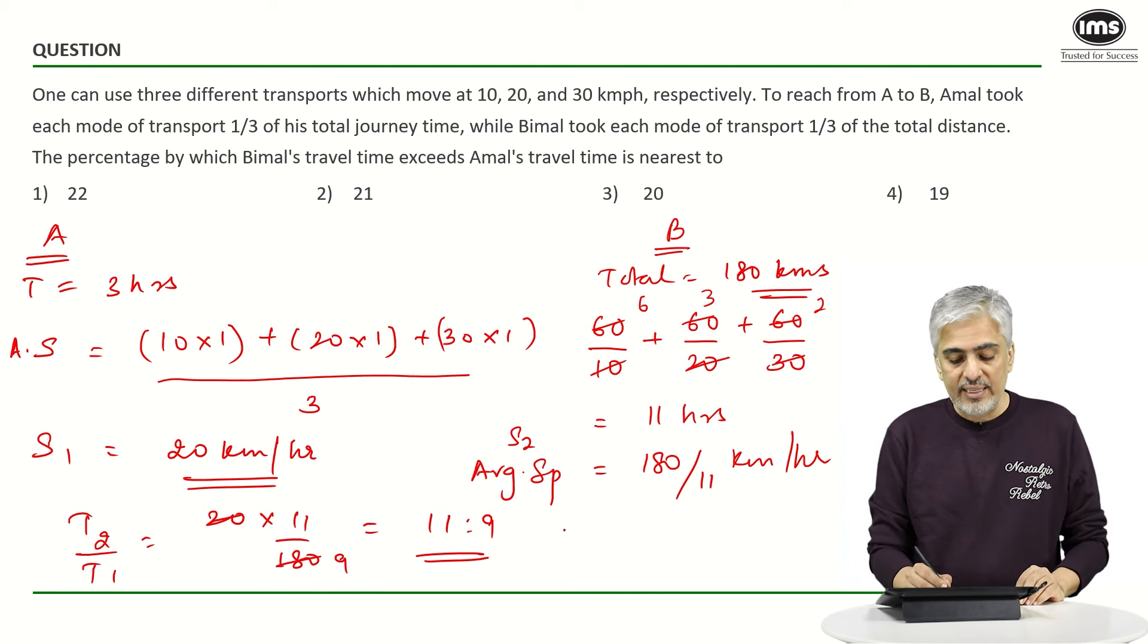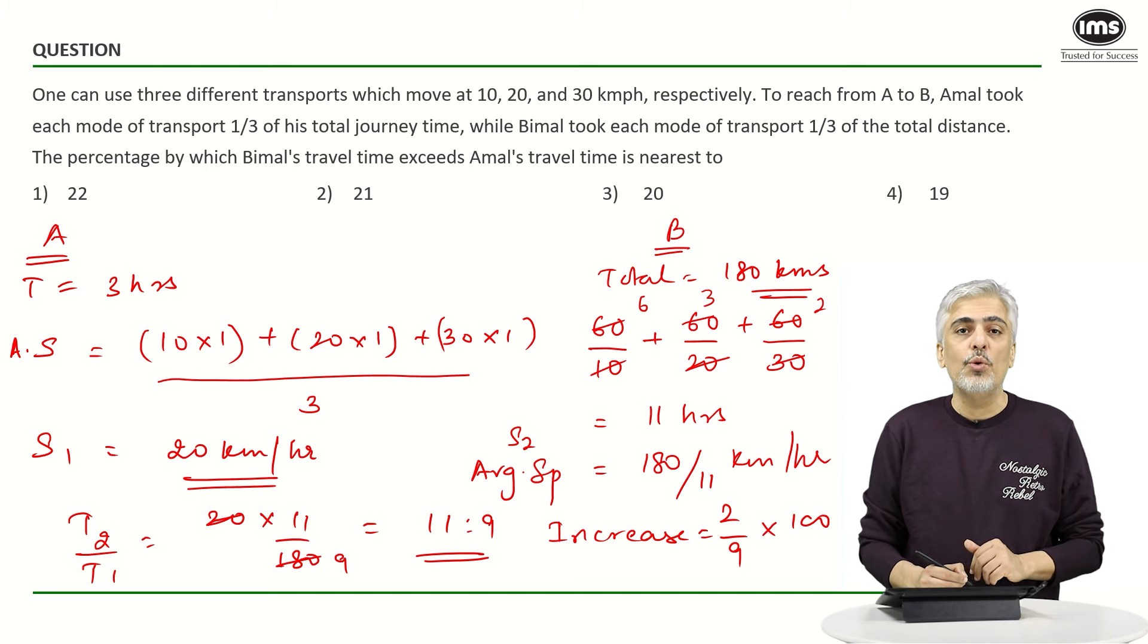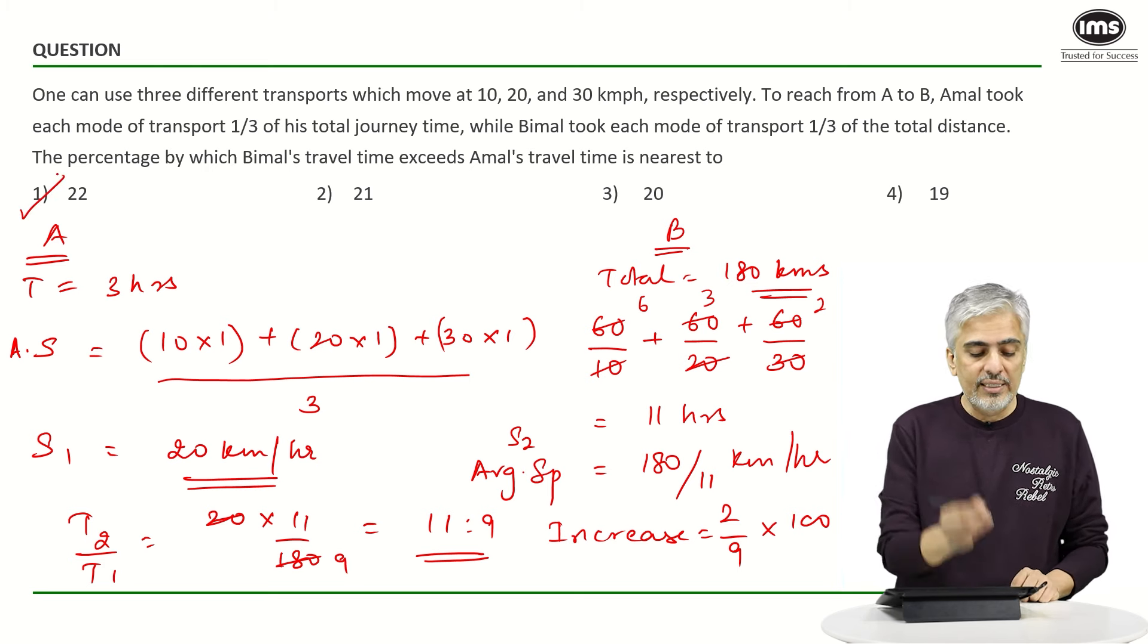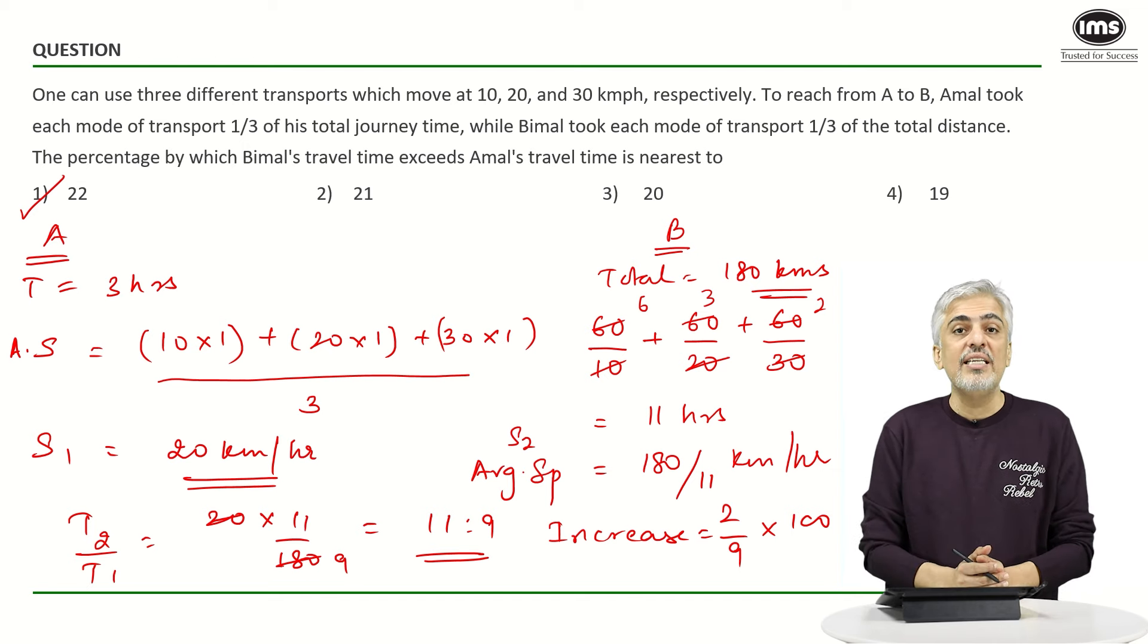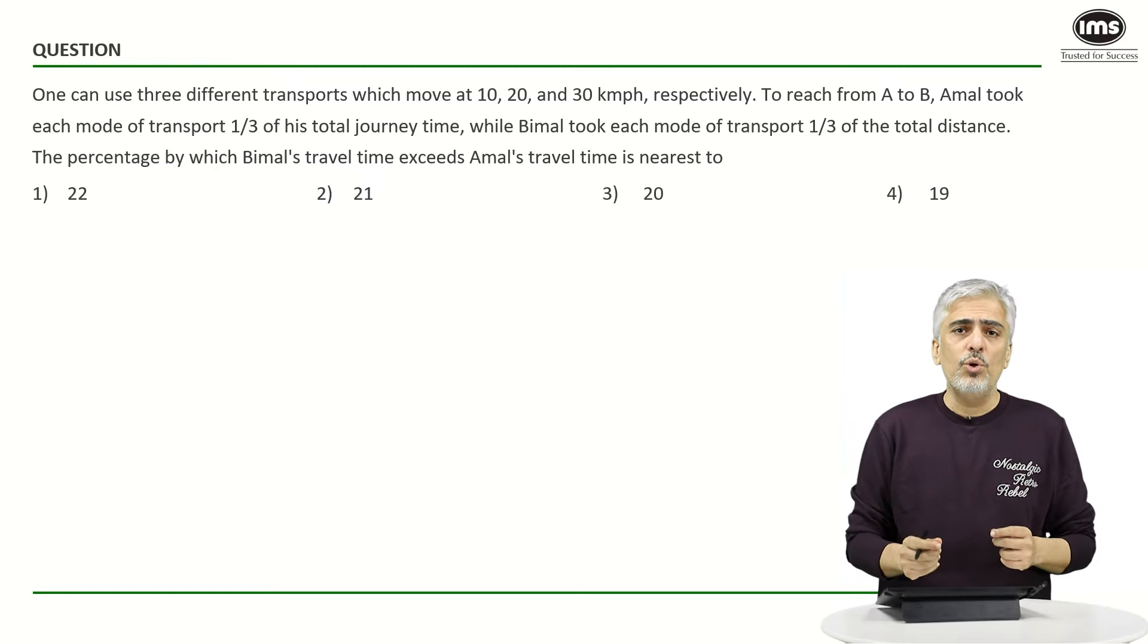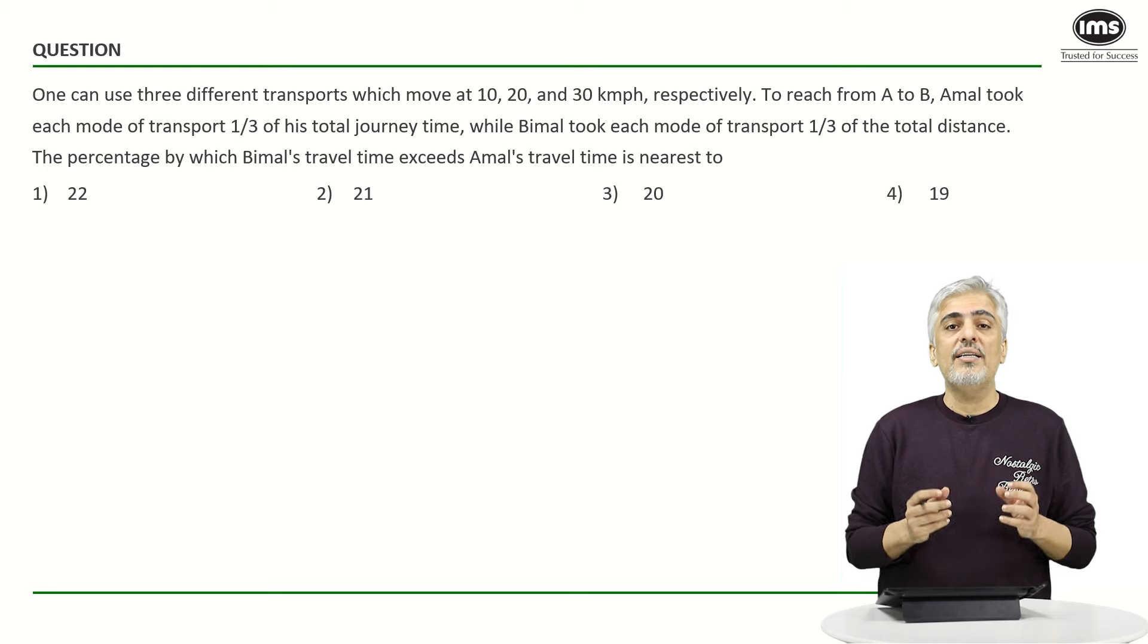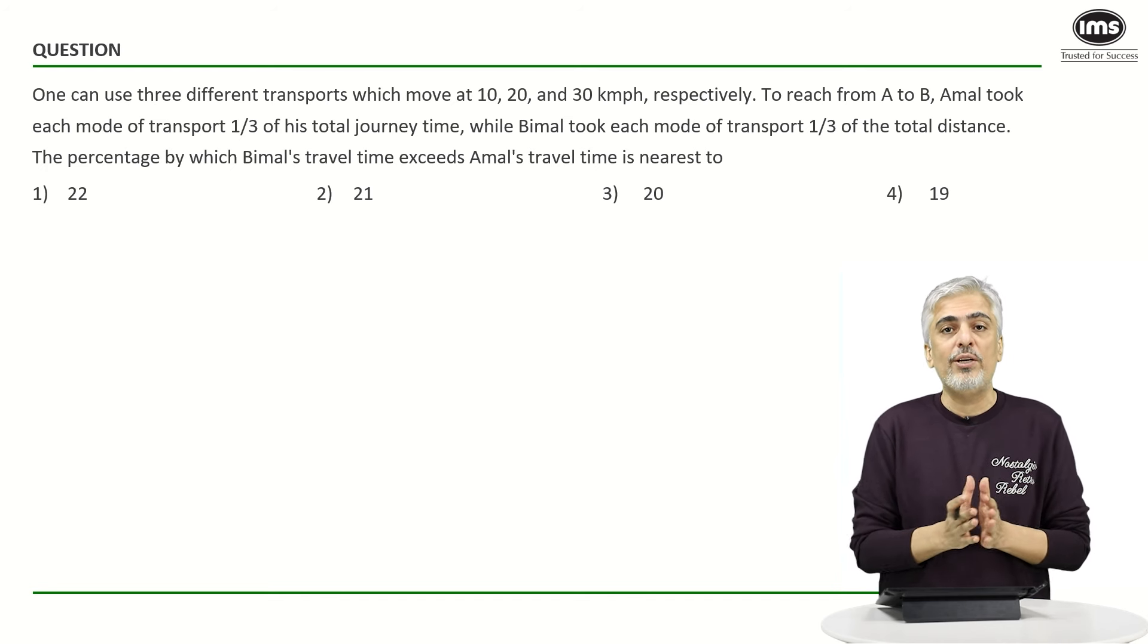So what is the extra or the increase for Bimal? It will be 2 by 9 into 100. We should know that 1 by 9 is 11.11. So 2 by 9 is 22.22 which is the first option because they have asked for the nearest option. So 22.22 is there. Have a look at one more approach for the same question. Now even though the second approach does not really change the calculation so much. But understanding the approach makes you understand time speed distance and the average speed concept a little bit better.